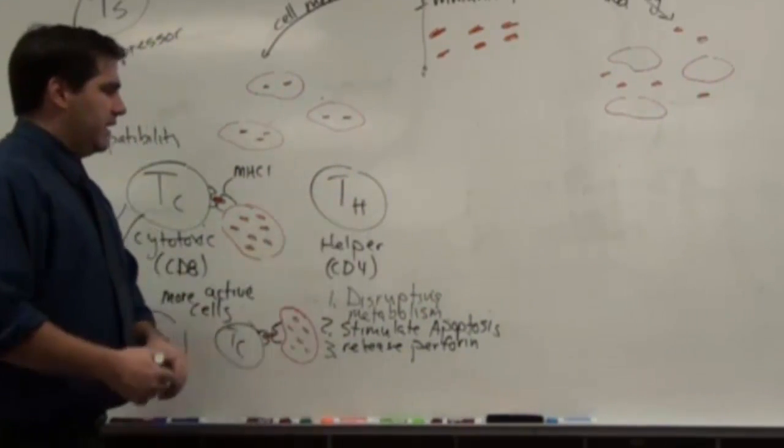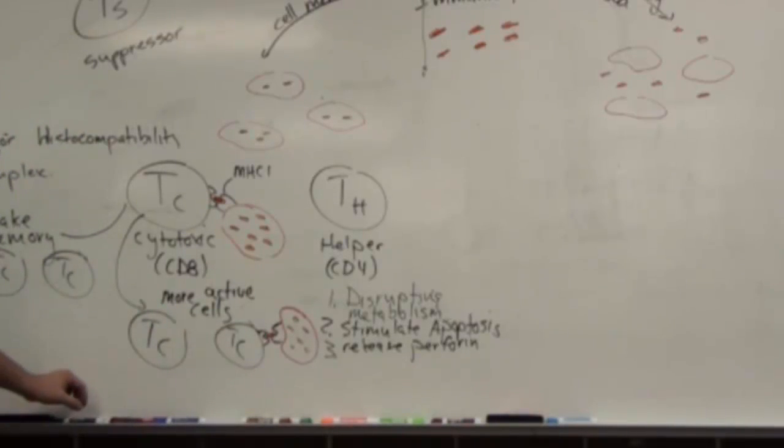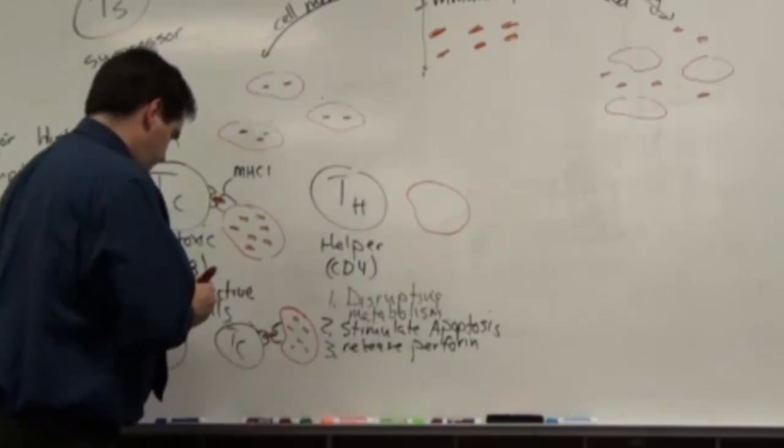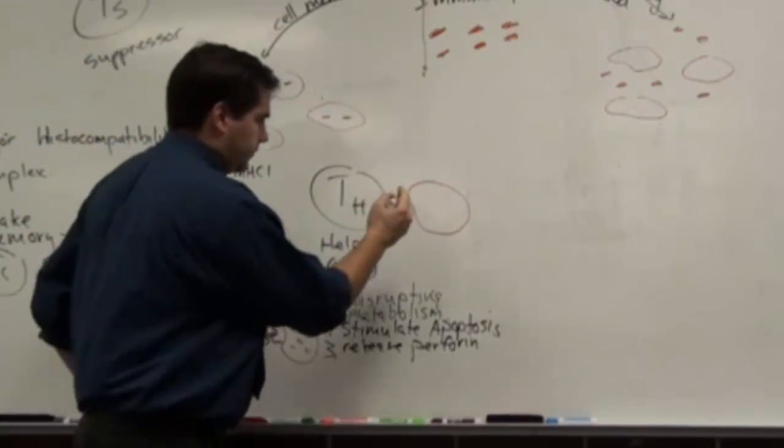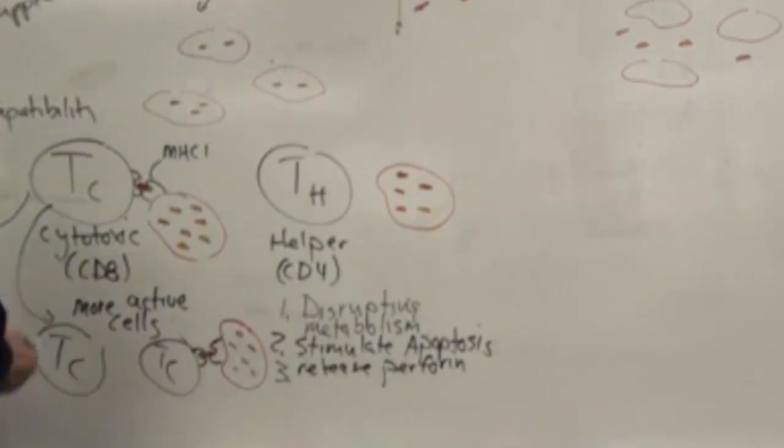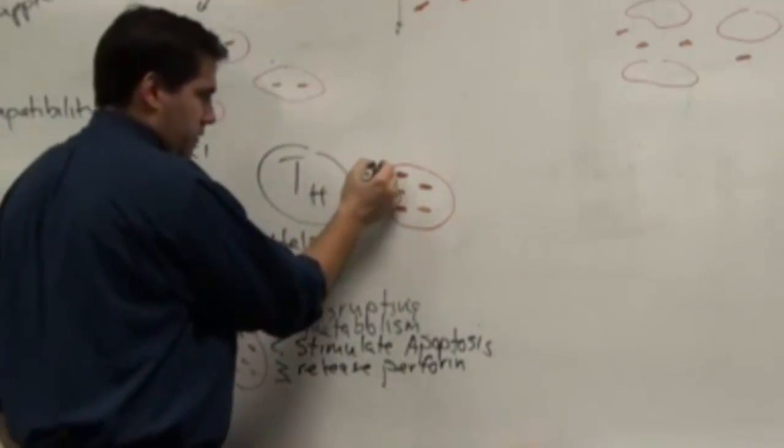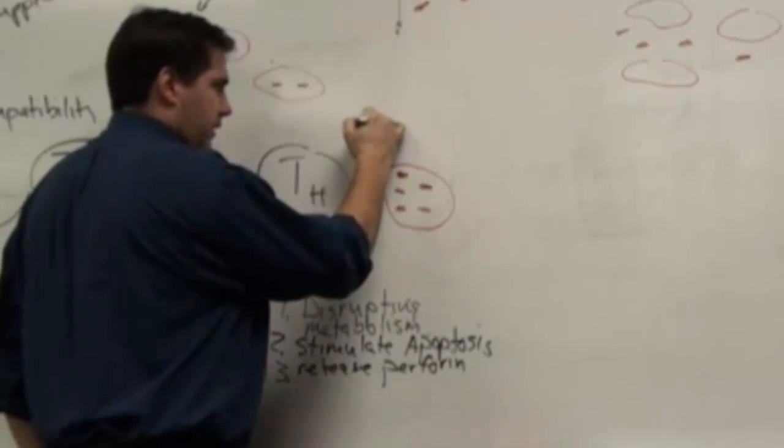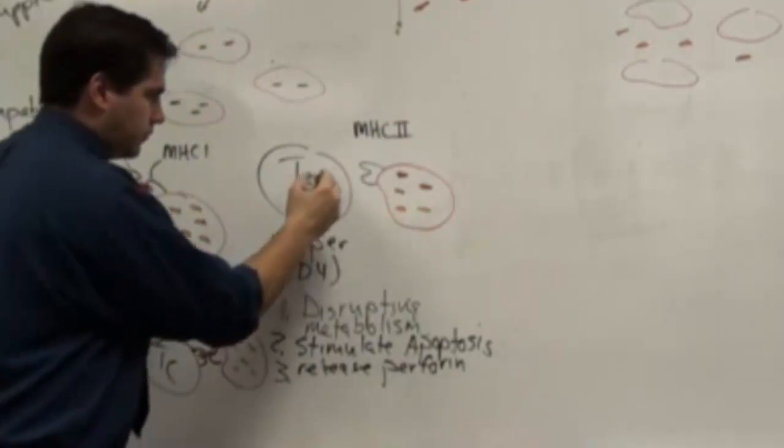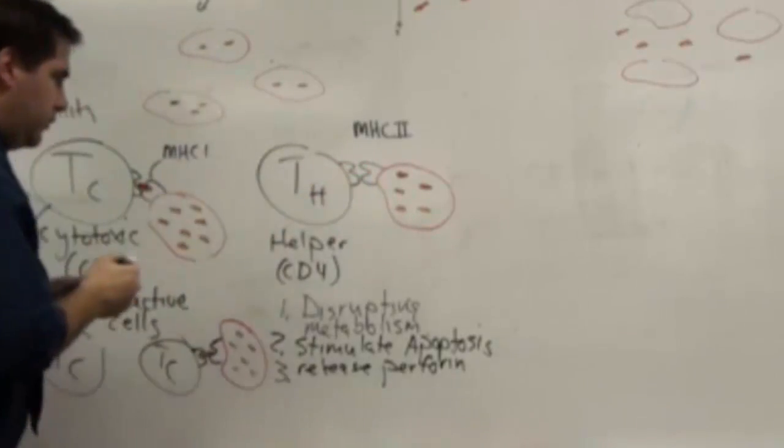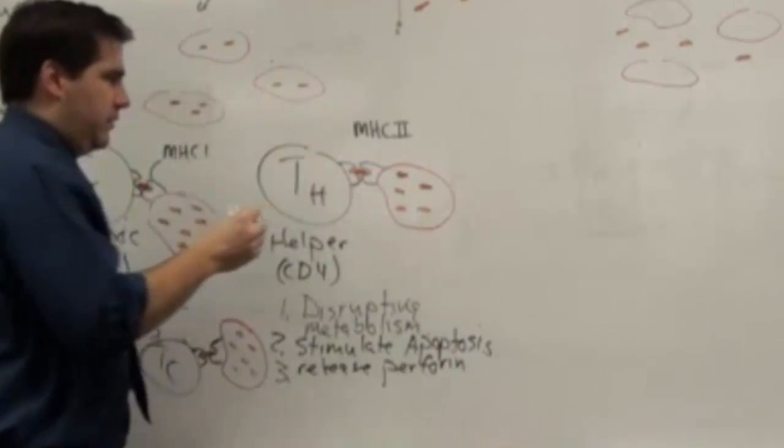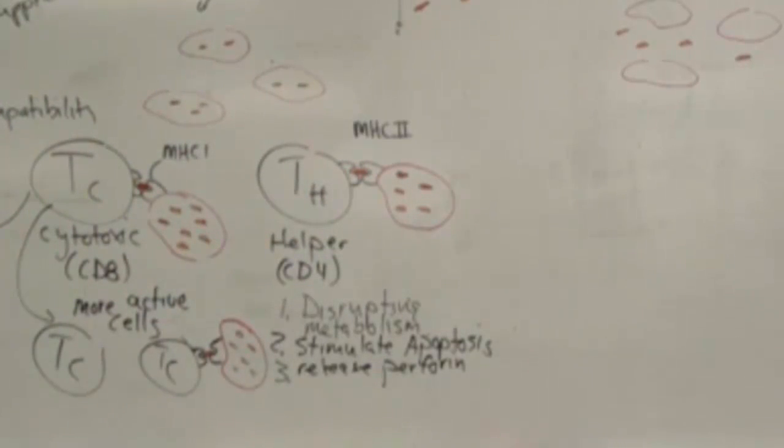So then you're like, well, why do I have this TH cell? And he's going to go looking for infected cells too. And he has MHC as well. But this one's called MHC2. And you're like, what's the difference then? Why do you need two? The difference is just, in my opinion, brilliance.